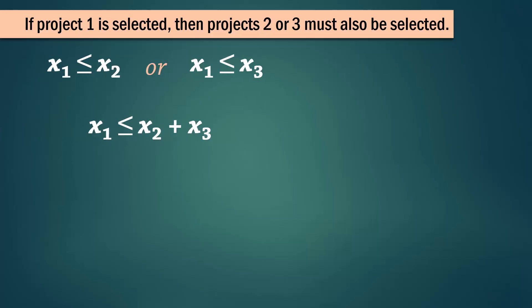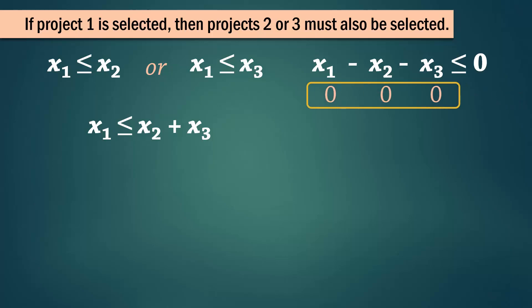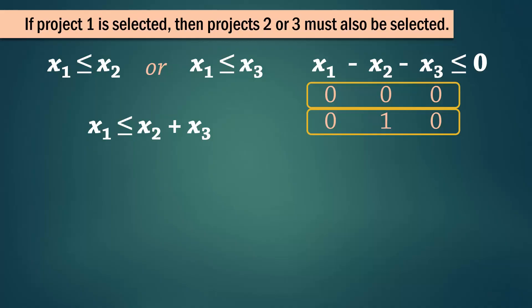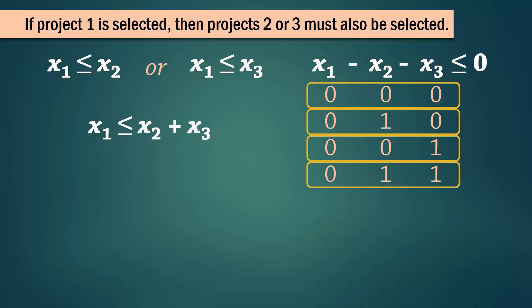And we write x1 ≤ x2 + x3, or equivalently x1 − x2 − x3 ≤ 0. So we can decide to choose none, we can have only project 2, or only project 3, or both projects 2 and 3 without project 1.